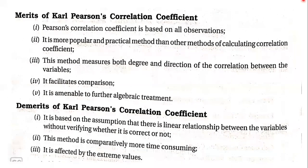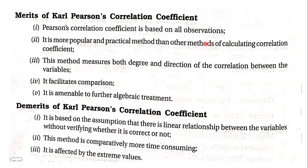Now let us see the merits and demerits of Karl Pearson's correlation coefficient. First merit: Pearson's correlation coefficient is based on all observations. We don't consider only the first and last value or only the central value — we consider all the data and find deviations for all data of X and all data of Y.